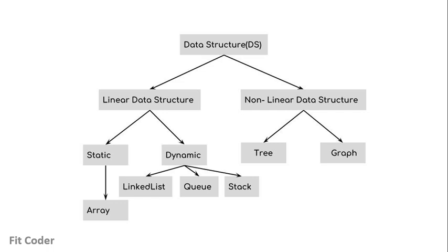As you might be knowing, data structures can be classified into two broad categories: Linear Data Structures and Non-Linear Data Structures. In Linear Data Structures we have Arrays, Linked List, Queues and Stacks, whereas in Non-Linear Data Structures we have Trees and Graphs. Graphs we have already covered — there is an entire playlist covering all the Graphs, Algorithms and Concepts. Here we will be focusing on Trees.